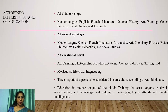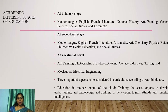At the vocational level, he insisted on giving much focus to art, painting, photography, sculpture, drawing, cottage industries, nursing and mechanical and electrical engineering. Three important aspects to be considered in curriculum according to Aurobindo are: education in the mother tongue of the child, training the sense organs to be developed, understanding and knowledge, and helping in developing logical attitude and scientific intelligence.